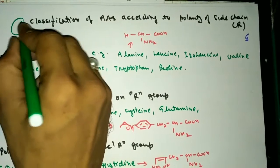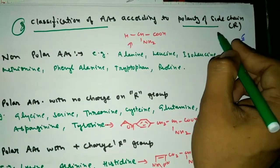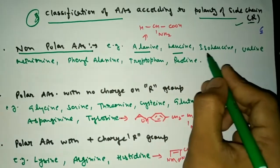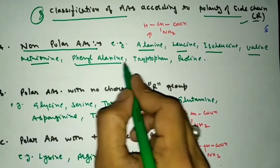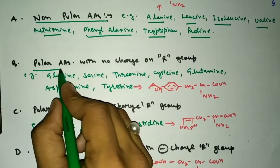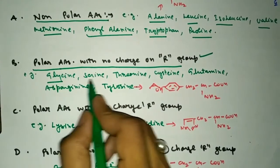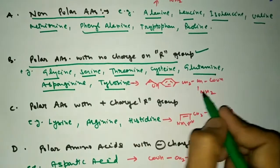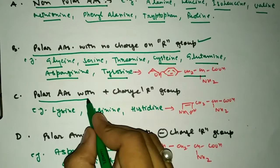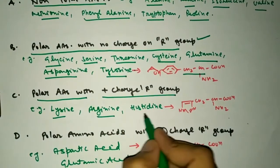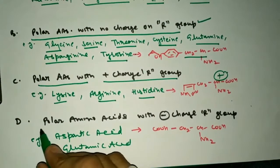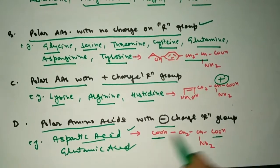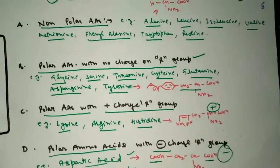The third classification is based on the polarity of the side chain, the R group. First are the non-polar amino acids: alanine, leucine, isoleucine, valine, methionine, phenylalanine, tryptophan, and proline. Second are the polar amino acids with no charge on the R group: glycine, serine, threonine, cysteine, glutamine, asparagine, and tyrosine — they have long side chains but no charge. Third are the polar amino acids with a positive charge: lysine, arginine, and histidine, which have a positive charge on the side chain. Fourth are the polar amino acids with a negative charge: aspartic acid and glutamic acid, which have more carboxylic acid groups, adding more negative charge to their structure.